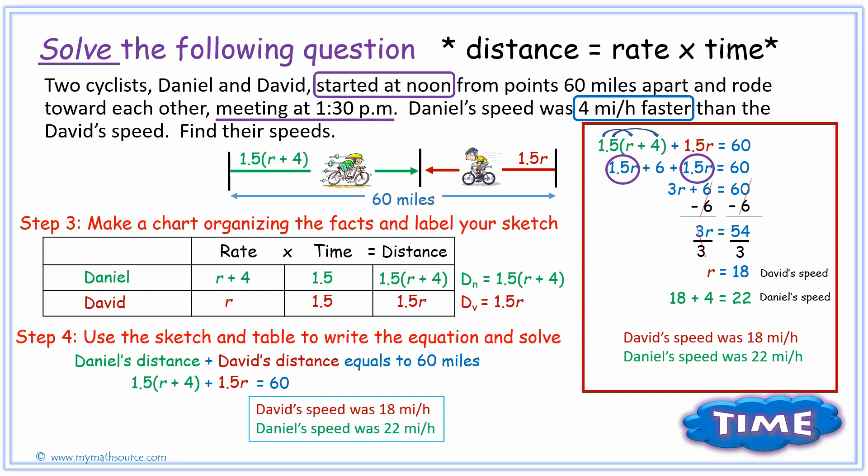Relatively quickly, we have found David's speed and Daniel's speed. David's speed being 18 miles per hour and Daniel's speed being 22 miles per hour. Now it's left up to you to check it. It's relatively easy if you substitute those numbers back into the information from the chart. You will see that they add up to 60 miles, and that's how you would do a distance rate time problem when the two objects are traveling from opposite directions.